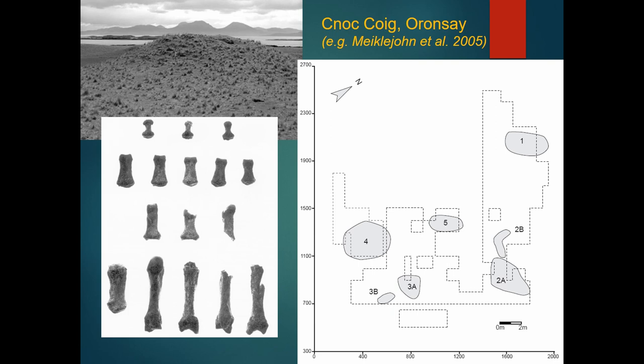As a quick example to illustrate that, I'm going to look at the Knocknacog midden on Oronsay. About 49 human elements were found dispersed within this midden, ranging from cranial elements to teeth, elements of the torso, limbs, and the hands and feet. This material has been quantified, but there has never really been analysis of the representation of different skeletal elements present.